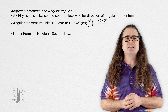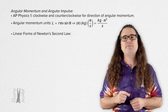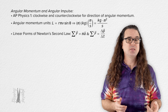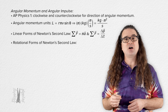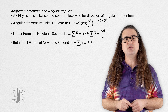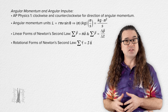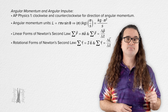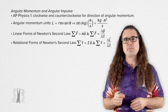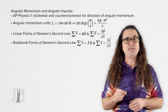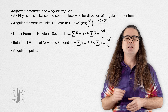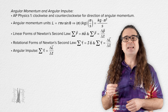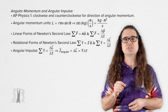We've expressed Newton's second law in two ways: net force equals mass times acceleration, and net force equals change in momentum over change in time. The rotational form of Newton's second law can also be expressed in two ways: net torque equals rotational inertia times angular acceleration, and net torque equals change in angular momentum over change in time. This rotational form can be rearranged to find angular impulse: change in angular momentum equals torque times change in time.